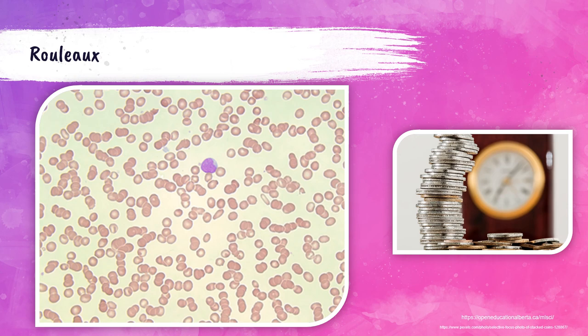This photo on the left-hand side shows a peripheral blood smear with something called Rouleau under the microscope. You can see the difference compared to agglutination — these red blood cells are kind of stacked together like coins. This is classic Rouleau, and I'll talk about what causes this on the next slide.